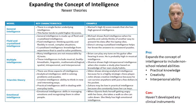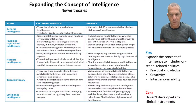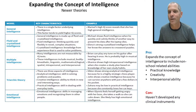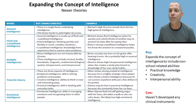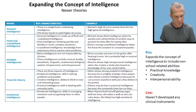Stereotypes are schemas. Remember in Chapter 7 we talked about schemas? Some of the schemas we have make important social distinctions, and we call those stereotypes. It's almost impossible for people not to have schemas or stereotypes in their head — that's an unfortunate function of our cognitive executive abilities.